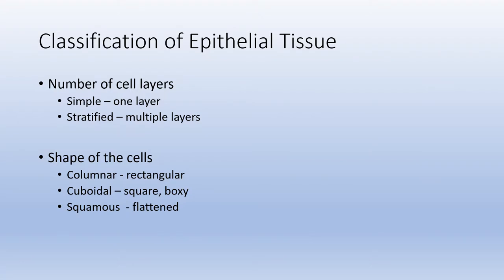Epithelial tissue is classified in two main ways. First, you look at how many layers of cells there are: if it's one layer, it's called simple; if it's multiple layers, it's called stratified. Then you look at the shape of the cell: rectangular shape is called columnar, square or box-shaped is cuboidal, and a flattened squished-looking cell is called squamous.